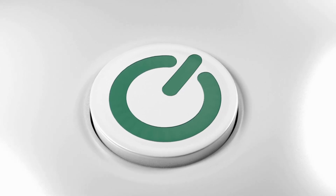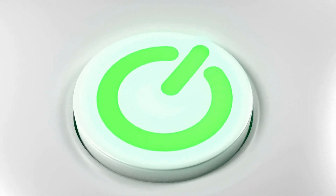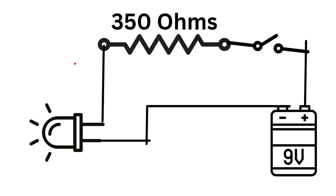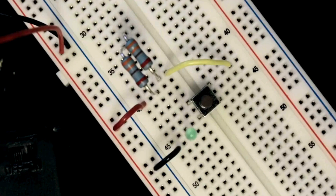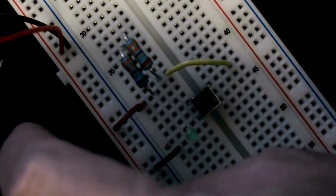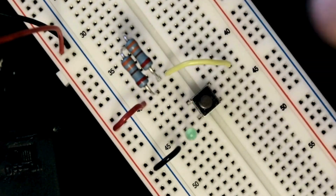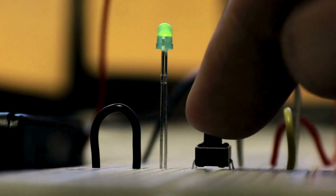Now that we've safely designed our simple circuit, let's add a push-button switch. This way, whenever the switch is pressed, the LED will safely light up. To add the switch, we simply connect it in series with the LED. When the switch is pressed, it completes the circuit, allowing current to flow and lighting up the LED. When released, the circuit breaks and the LED turns off. When we press the push-button switch, the LED lights up, thanks to our careful application of Ohm's Law to control the current.